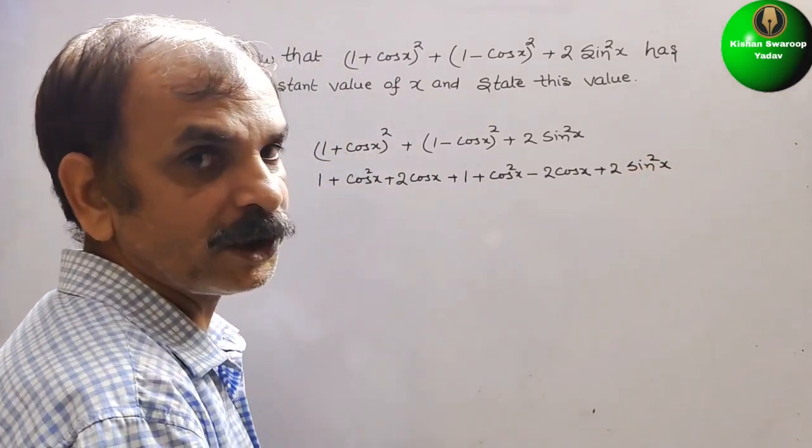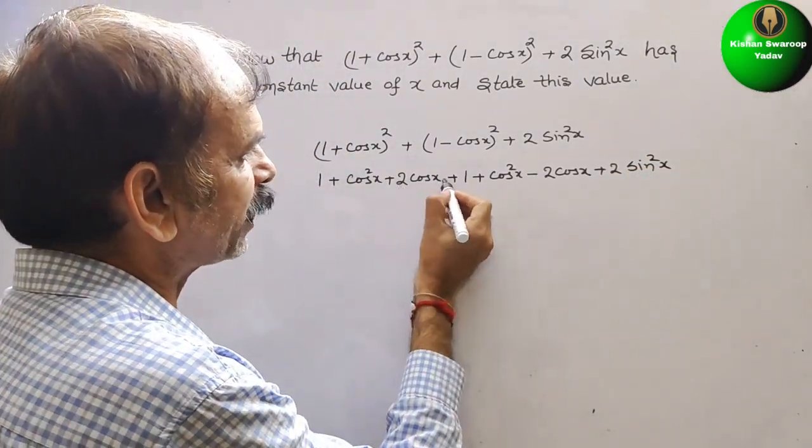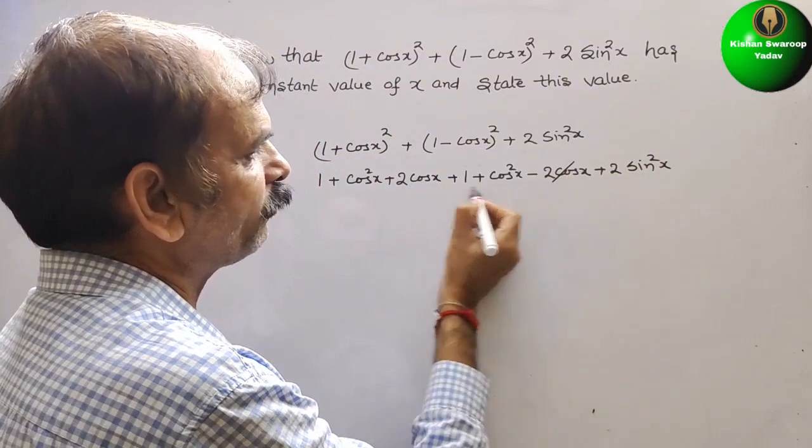So now if you see, here 2cos x, here minus 2cos x, it will go out.